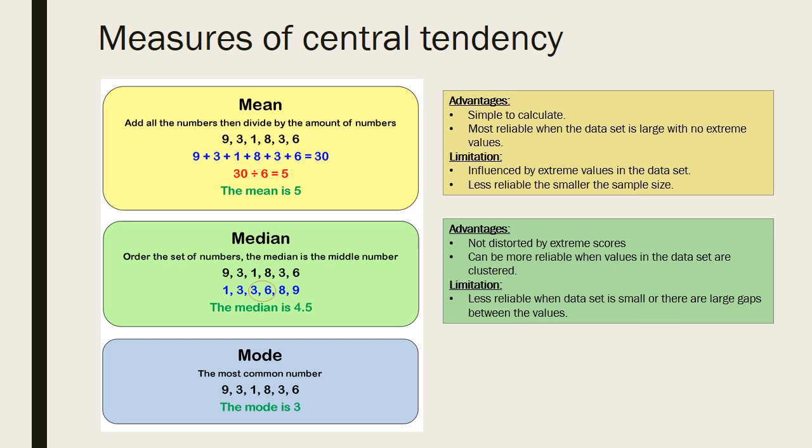However, it also loses reliability with small data sets or if there are large gaps between the values. The mode is the most appropriate measure of central tendency when you have nominal or categorical data. However, it's pretty limited as it cannot exist or be more than one value.